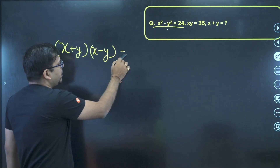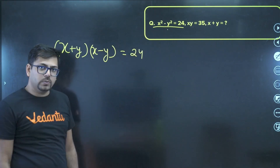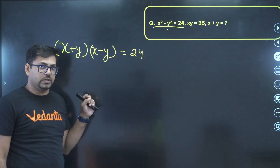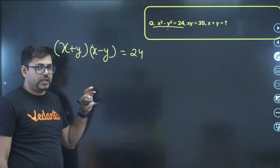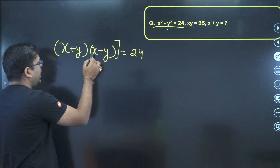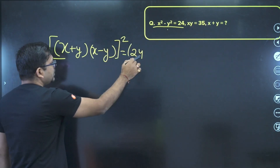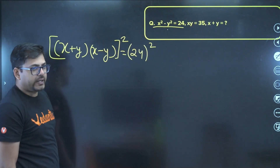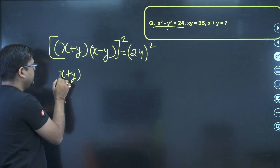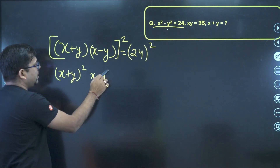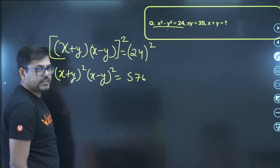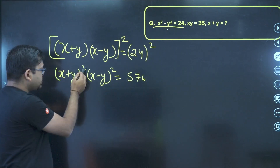Now I can do squaring on both sides of this equation. You might be wondering why — let me tell you. If you square both sides, you'll have (x+y)² times (x−y)² equals 24², which is 576.